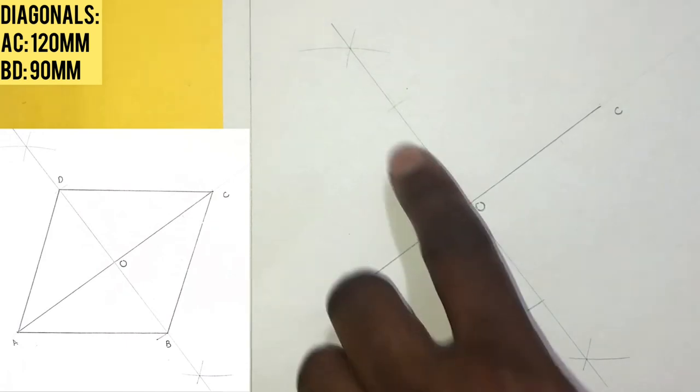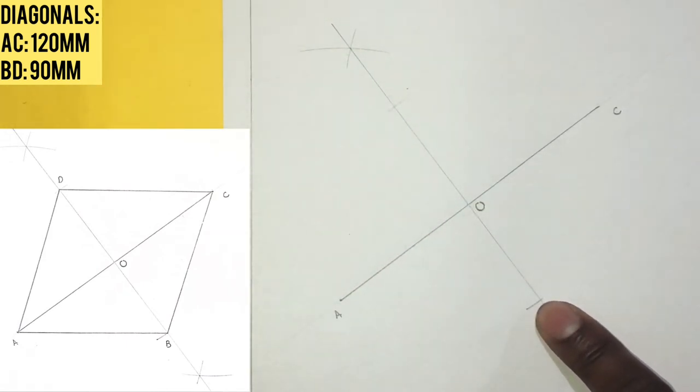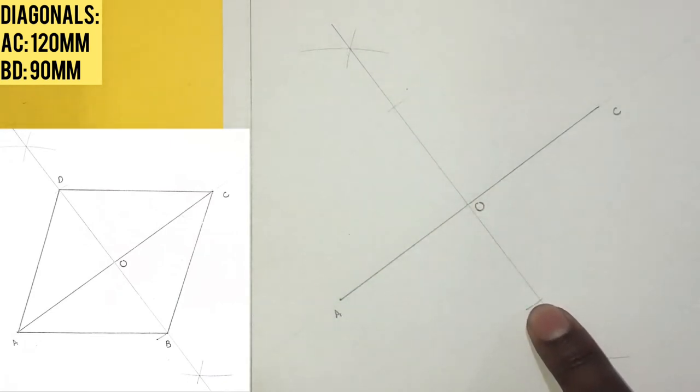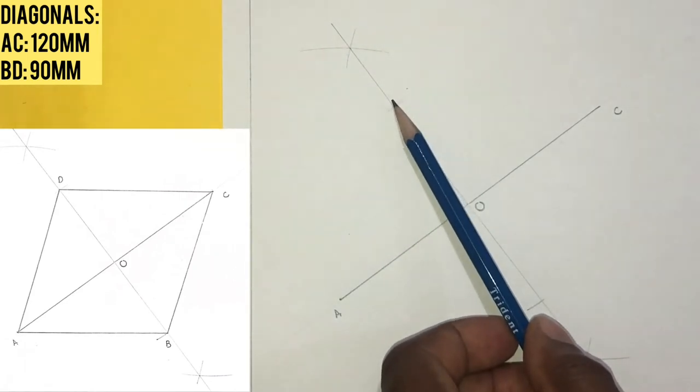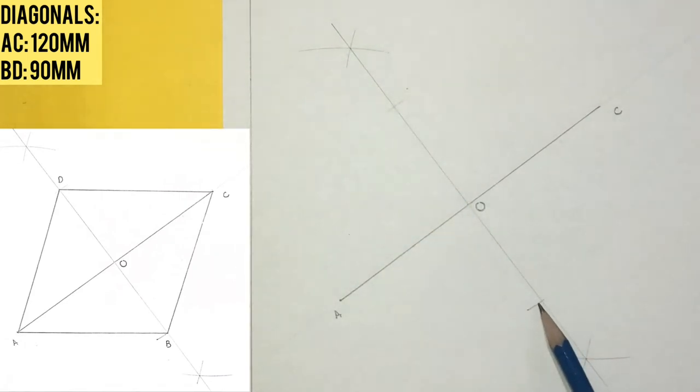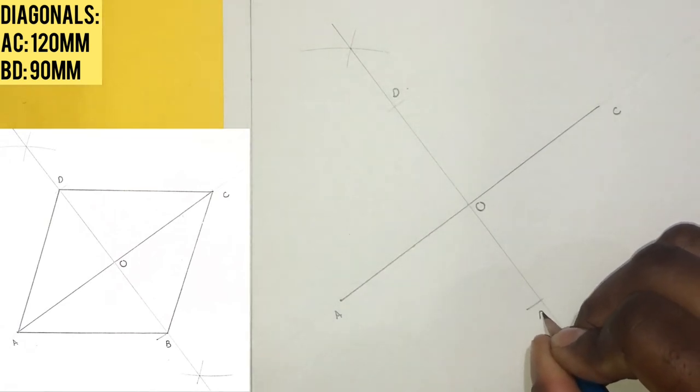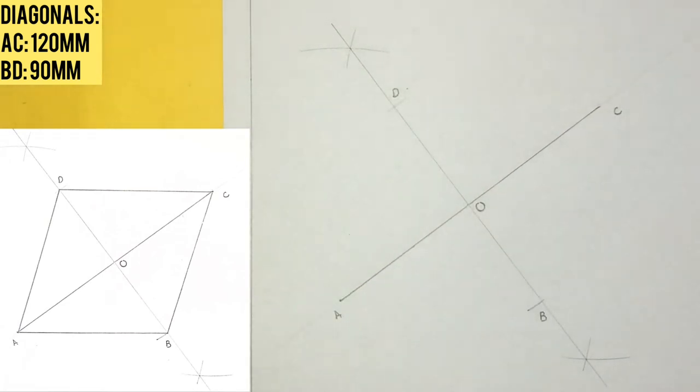And I will scribe an arc that is 45 millimeters above the AC line and 45 millimeters below. Now from here to here is now 90 millimeters. 45 plus 45 equal 90. Now this is giving us point D and this intersection of this arc and this line to this diagonal is giving us point B. I will now draw a line from A to B, B to C, C to D, also A to D to give me my rhombus.